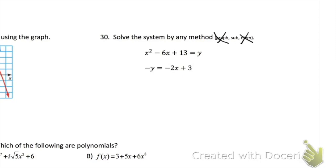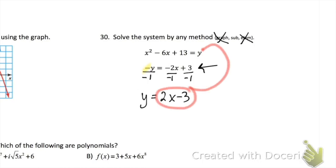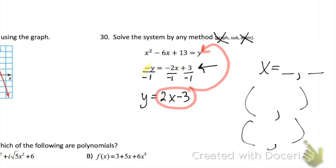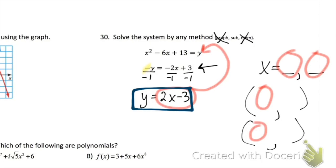Problem 30 says to solve the system using any method — graphing, substitution, or elimination. I would not use graphing, and I would not use elimination. My suggestion is substitution. Take the linear equation, solve for Y by dividing everything by negative 1 to get rid of the negative. Then take what Y equals and plug it into the other equation. You'll need to get everything on one side with x² positive, then factor. You'll get two answers for X — your final answer is two points. Plug each X back into the equation to get Y.